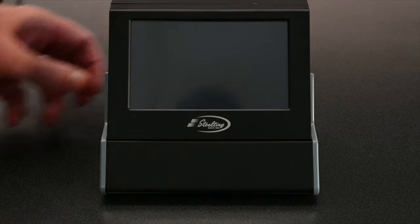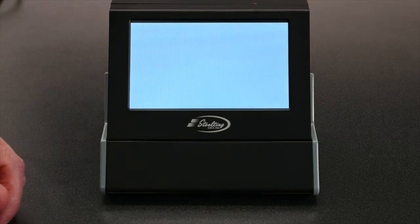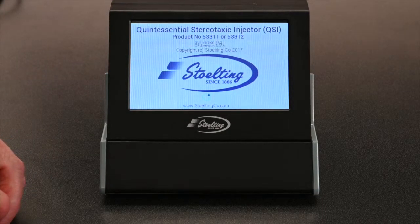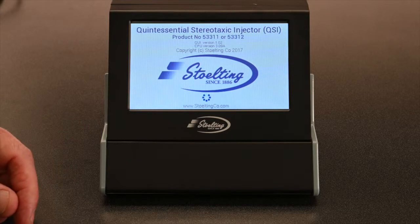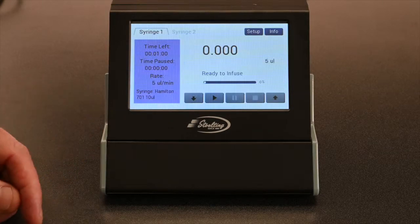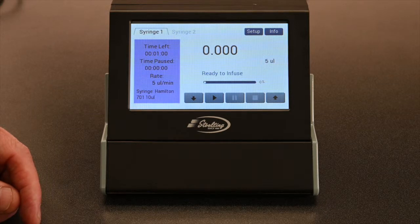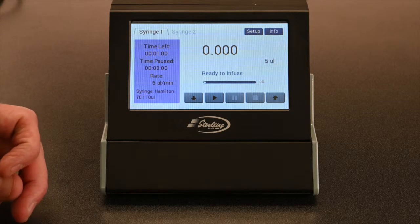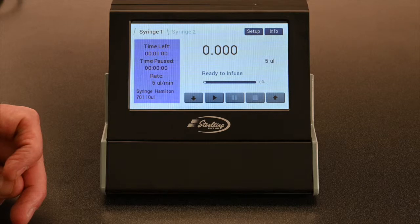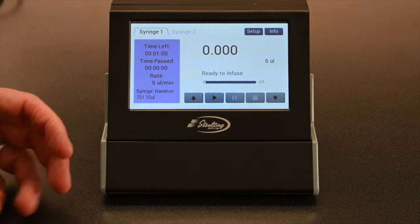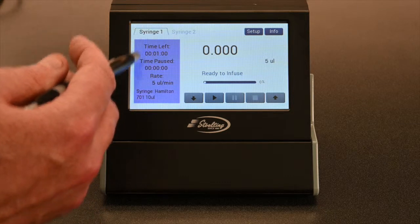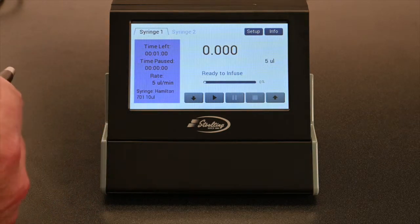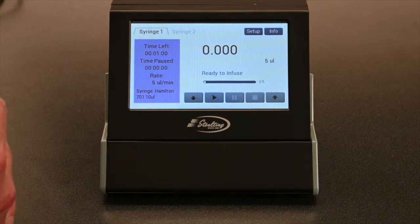All right, now that I've shown you how to load the syringe into the injector head, I now want to explain some of the functions associated with the control box, the touchscreen control box. So right here, I've just turned on the power button, you saw the little Stolting logo, it's about a five second screen that pops up, and now we're at our home page. On the home page, you'll find the information associated with the default settings of the QSI control box.